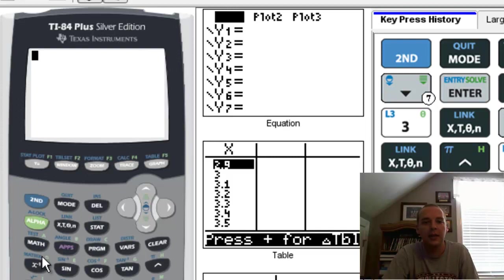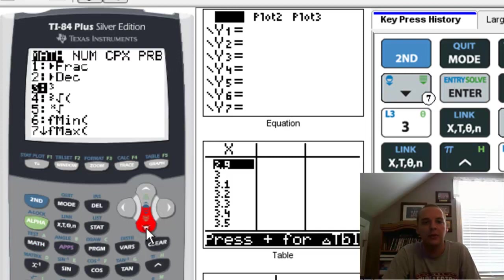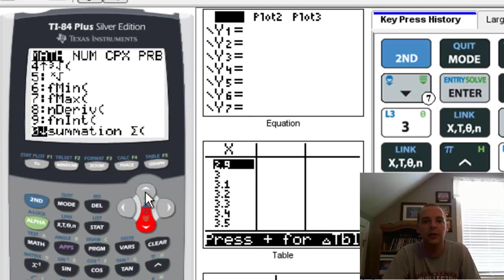If you take your cursor and you go to the math button, which is right here, and you'll scroll down until you find something that says nDeriv, that's the nth derivative of a given function. So there it is on my screen, it's number 8 here.